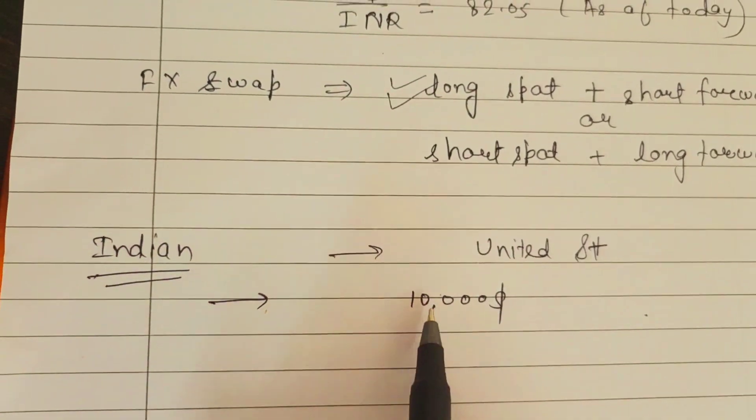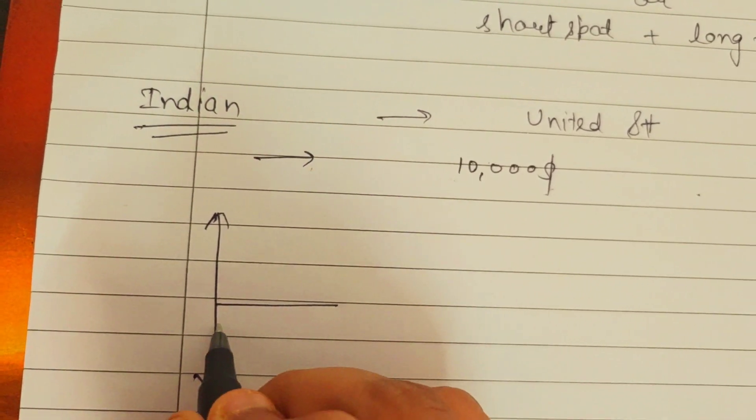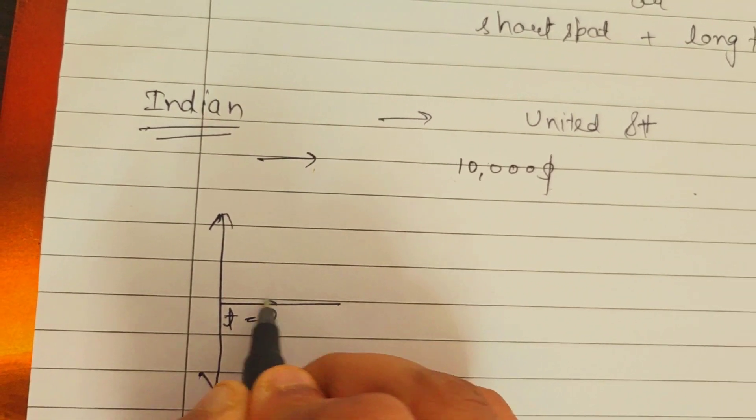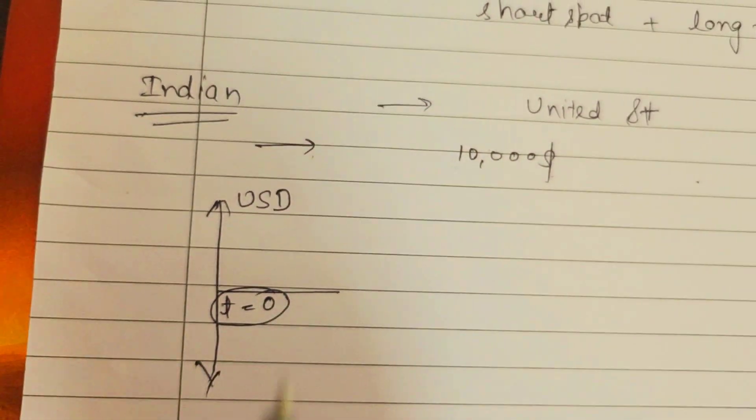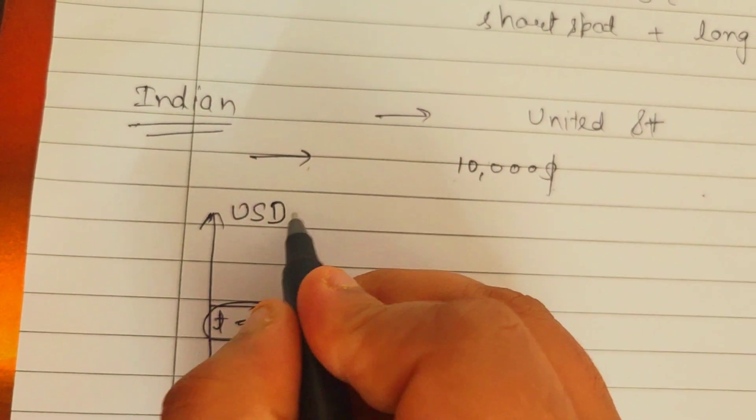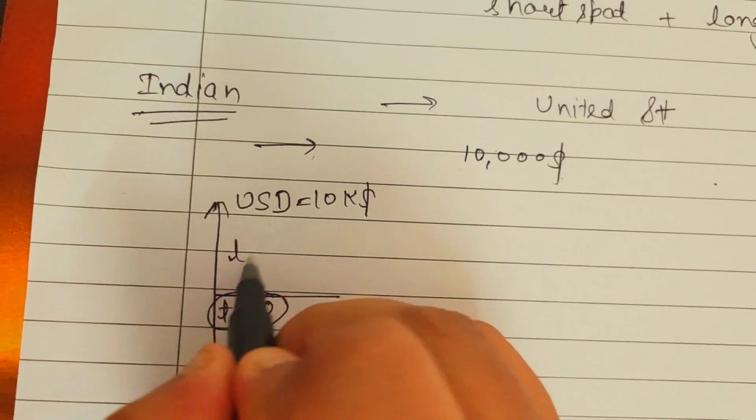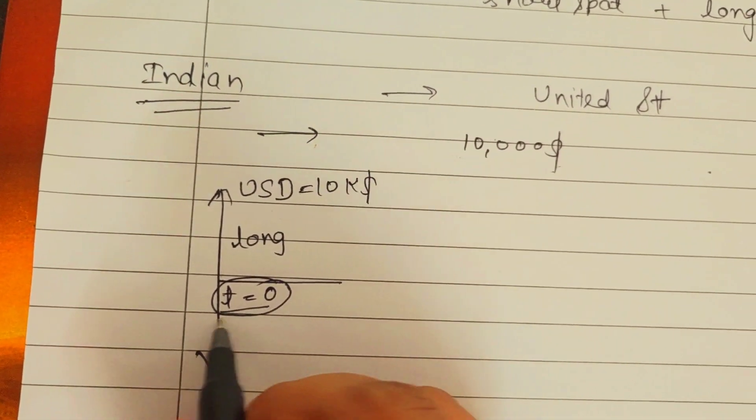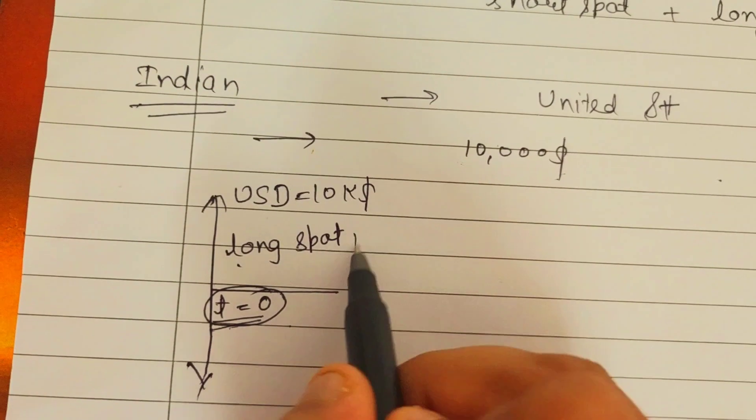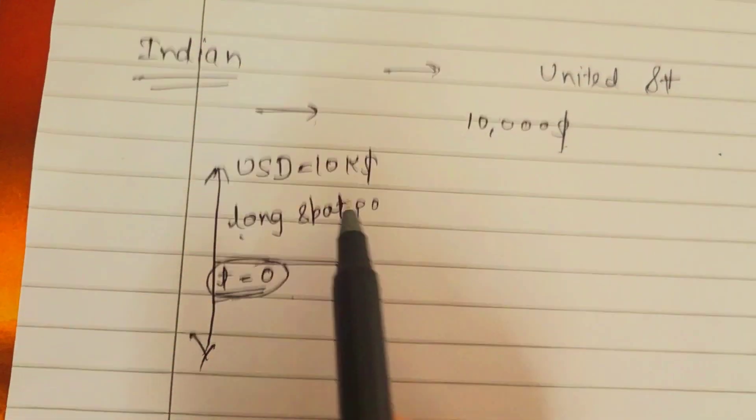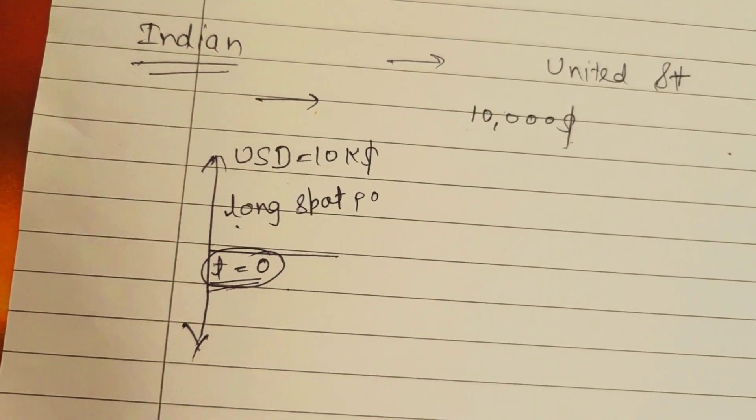This Indian person is trying to get $10,000 for its working in the United States. If I draw a graph, it is t=0 which is today. Today this person is looking to buy USD currency which is 10k dollars. This will be a long spot position.